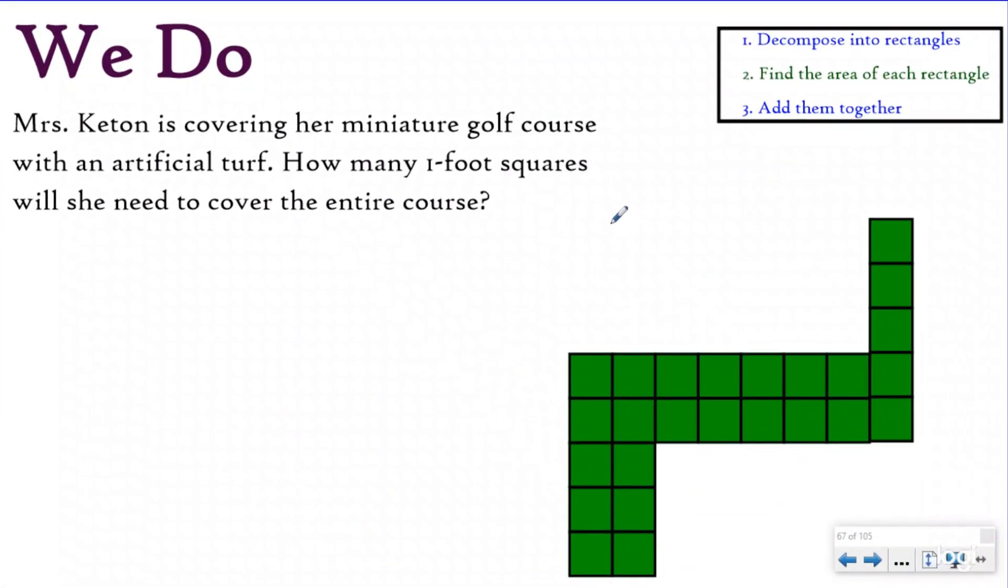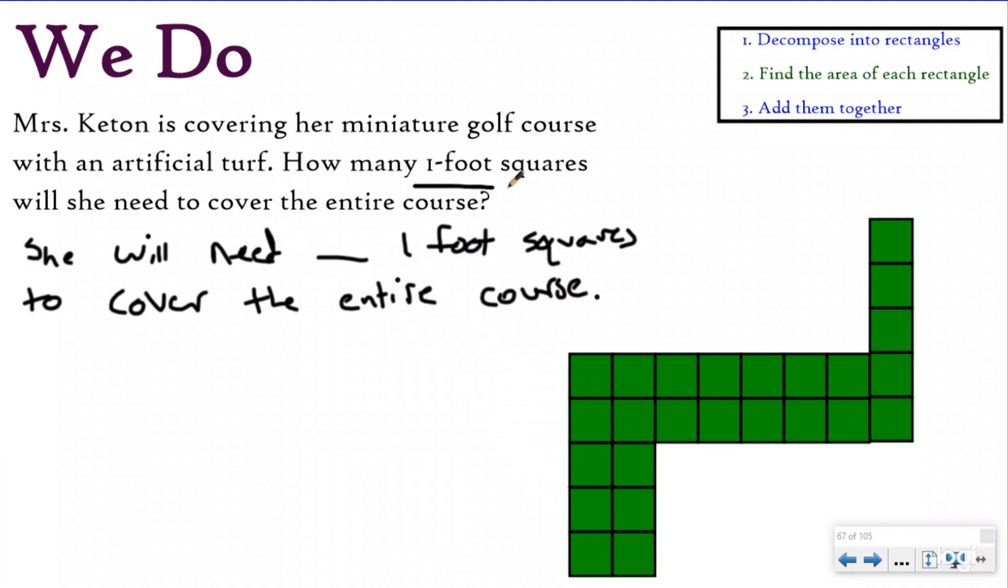Let's take a look at a we do. So here we have our we do problem. It says Mrs. Keaton is covering her miniature golf course with an artificial turf. How many one foot squares will she need to cover the entire course? So my statement is going to say she will need blank one foot squares to cover the entire course. Now that we're in the statement I need to go back and identify.